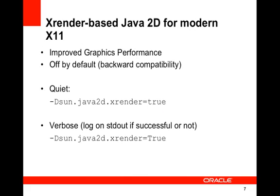XRenderer-based Java 2D for modern X11. The new XRenderer-based 2D rendering pipeline is supported for modern X11-based desktops and offers improved graphics performance. The pipeline is disabled by default, but can be enabled on the command line with the property -Dsun.java2d.xrender=true. On older X11 configurations that may not support XRenderer, a verbose form of this flag can be used to enable a message to stdout indicating whether the pipeline was actually enabled.